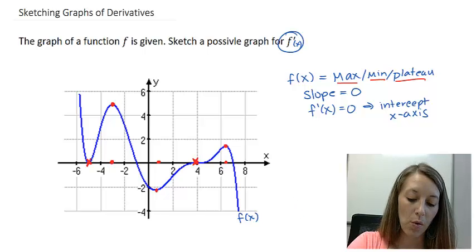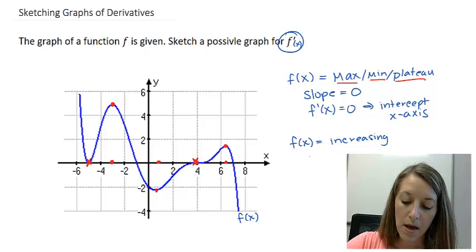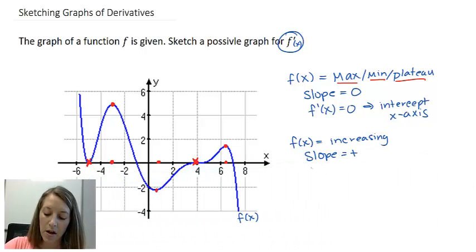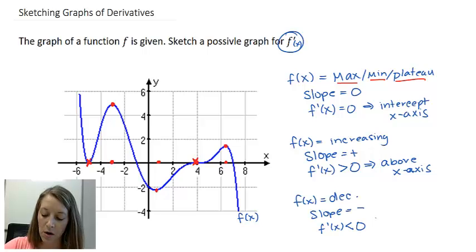Let's go with what else we know about slope. Whenever our original function is increasing, that tells us the slope is positive, so our derivative is going to be greater than zero — it's going to be above the x-axis. Likewise, whenever our original function is decreasing, the slope is negative, so our derivative is going to be less than zero, or below the x-axis.